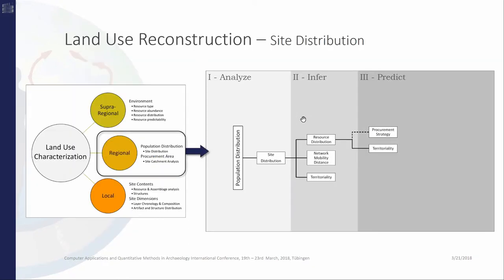Starting with population distribution, you can see the model from the analytical perspective. This shows specific steps we can undertake when reconstructing land use and how reliable the results are. Each land use reconstruction has three steps: Analysis, inference, and prediction in the gray diagram.